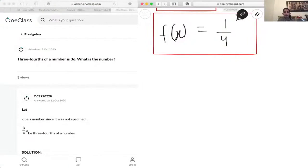Okay, this example, our question is: three-fourths of a number is 36. What is that number?